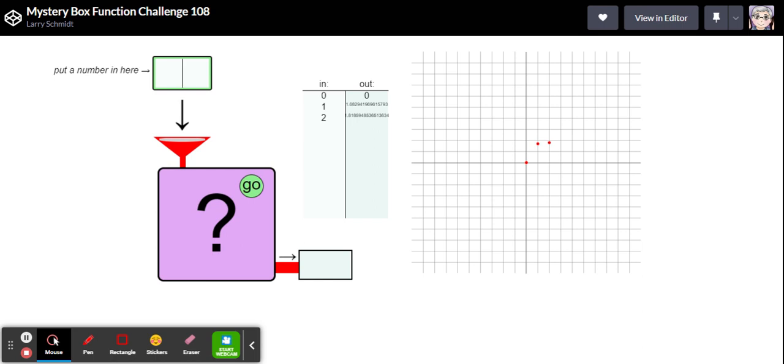Maybe a downward opening parabola, another decimal there. Let's try a three. Now it's going down.